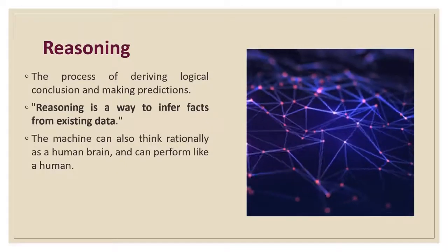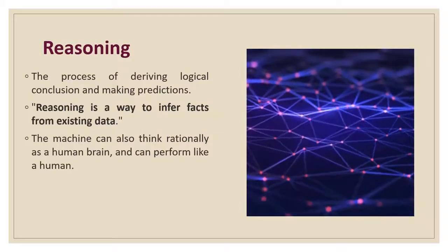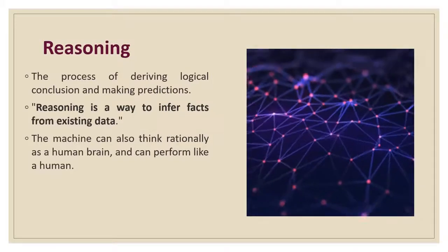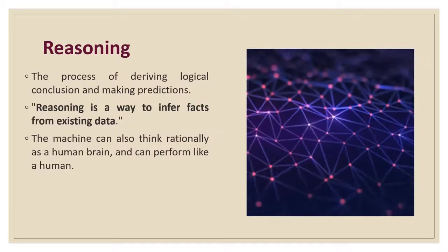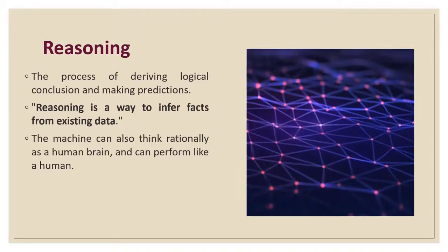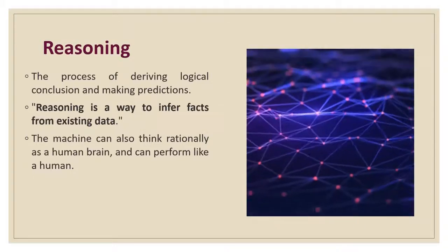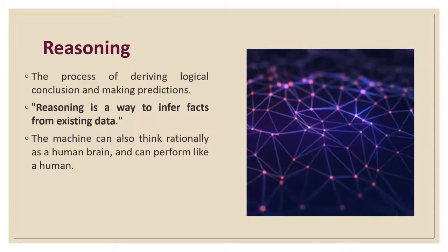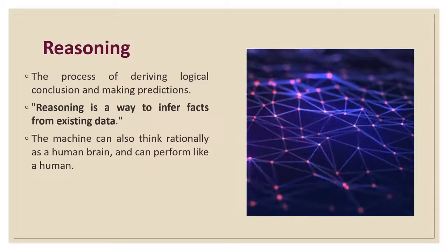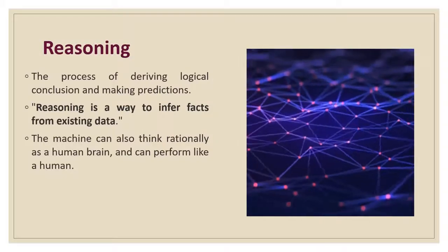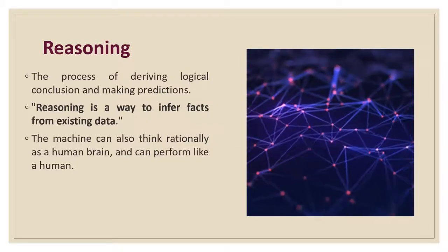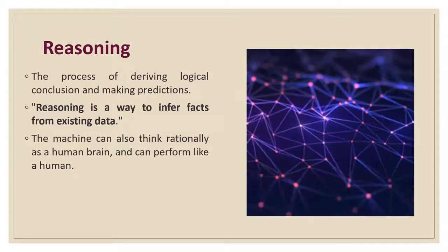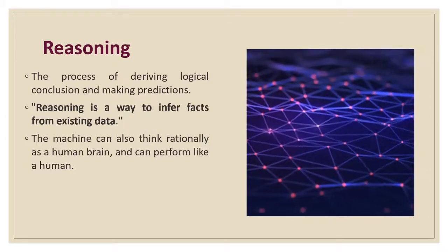First we will be seeing about reasoning. Reasoning is the mental process of deriving logical conclusions and making predictions from available knowledge, facts, and beliefs. We can say reasoning is a way to interact from existing data. It is a gentle process of thinking rationally to find valid conclusions. In artificial intelligence, reasoning is essential so that the machine can also think rationally as a human brain and can perform like a human.